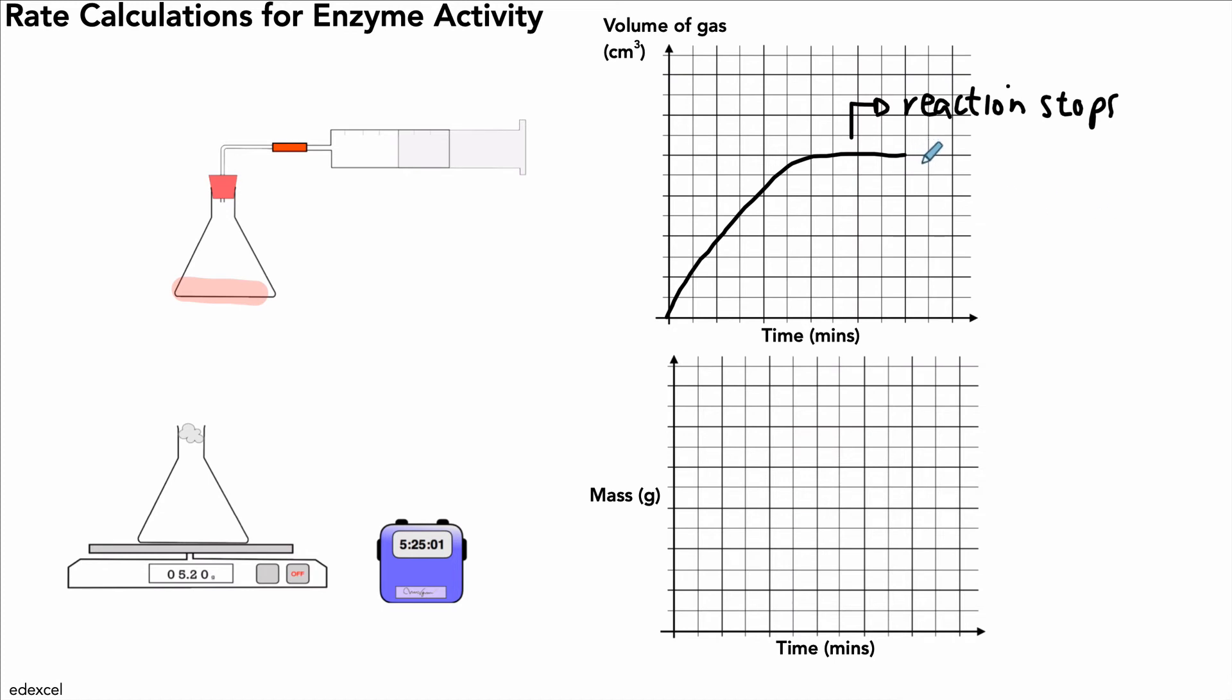You could do this experiment again, for example. You could raise the temperature. So imagine that was 20 degrees. We could raise the temperature to maybe 30 degrees, and the graph would look like this. It would reach the maximum, same as before, but in a shorter amount of time. If we had a cooler temperature, again, it would reach the same maximum, but it would take a longer amount of time. As long as we keep the enzyme and substrate concentration the same, this could be the results that we would get.